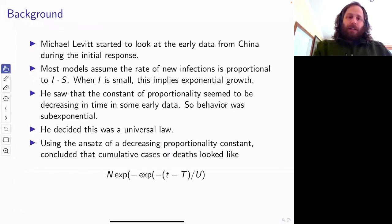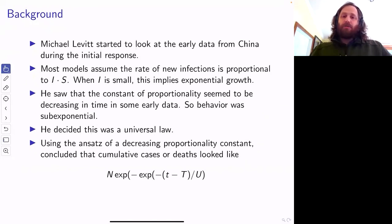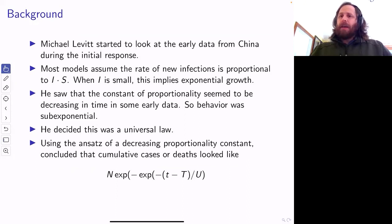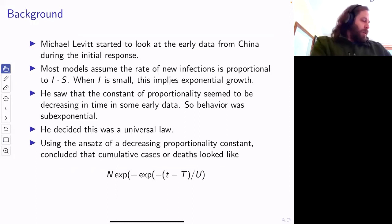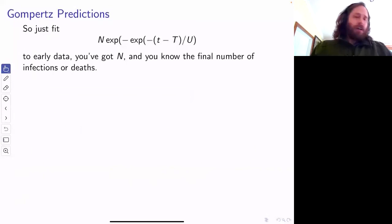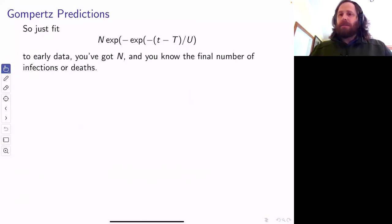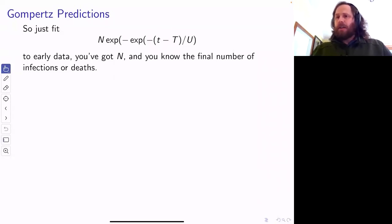He made predictions based on this and did a really good job of predicting the total number of cases in China. I think the reason for this observation was because China was intervening at the time, getting stronger and stronger interventions — so it's hardly a surprise the rate of transmission was going down. But he took this and tried to apply it to other data. He concluded the cumulative number of cases would look like a double exponential formula: exponential of an exponential, where the pre-factor is the final size of the epidemic. So you fit that to your early data and you'll know the final number of infections or deaths — and in China he predicted both these numbers really well.